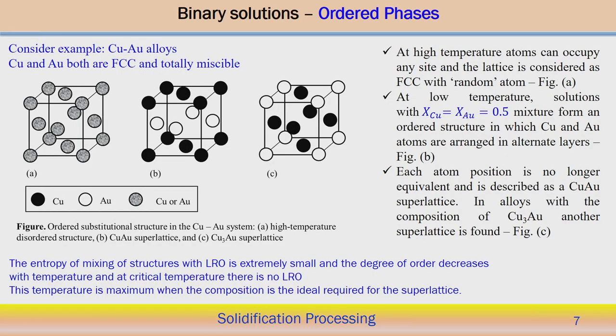Now in the ordered phase, we can take an example of the copper–gold binary system. Copper and gold both have FCC structure and are totally miscible — at any proportion they can mix with each other. In the ordered structure, the substitutional structure in the copper–gold system shows that at high temperature there is a disorder structure — atoms can occupy any site, it becomes more disordered. Since there is not much size difference between copper and gold atoms, they can take any lattice positions, giving a random atom arrangement.